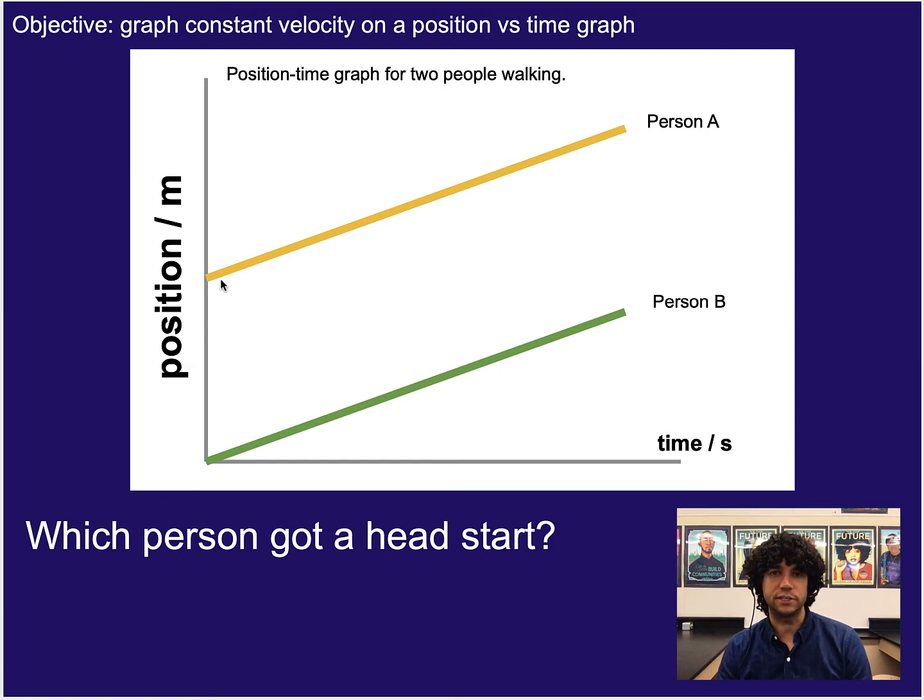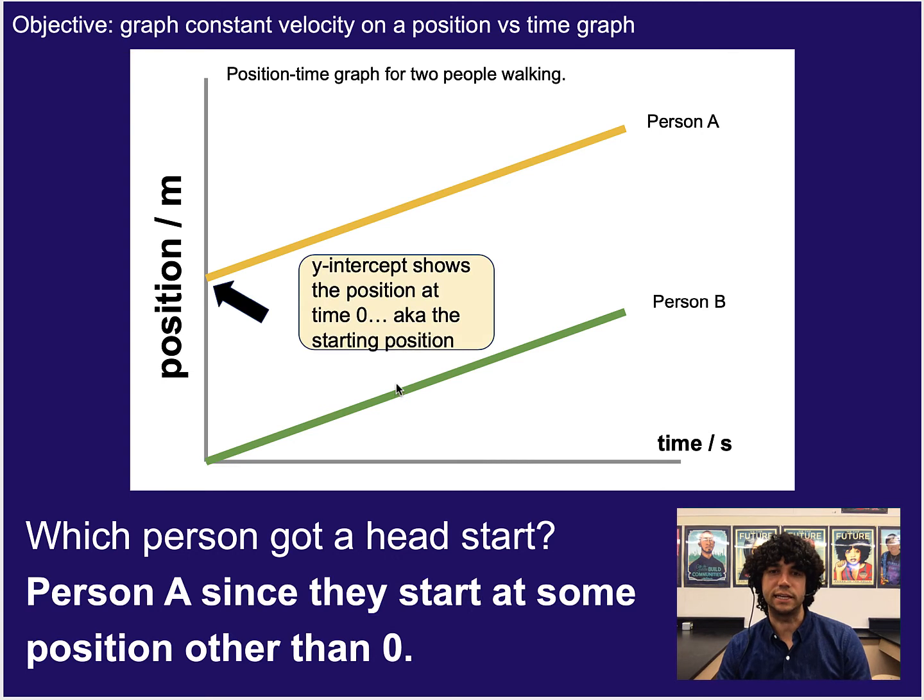So hopefully you took a look at this graph and you realize, oh, even at time zero, person A is already up here at, let's say, five meters. So they kind of got a head start from person B. They didn't start in the exact same position. So what that tells us is that the y-intercept on our position-time graphs tells us the starting position. So whatever the y-intercept is, it's kind of like saying this is your whatever the y-axis represents at time zero, in this case position, or displacement, or distance.